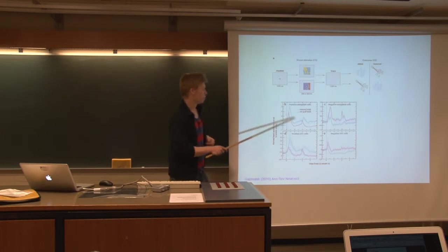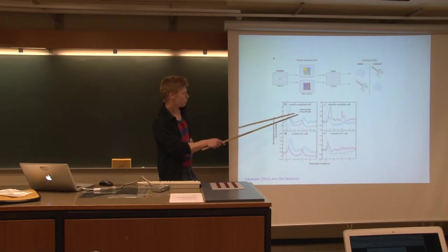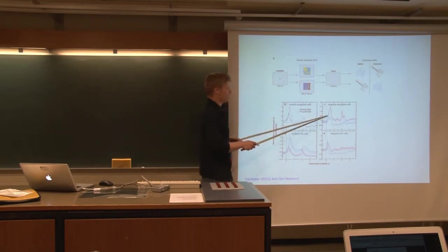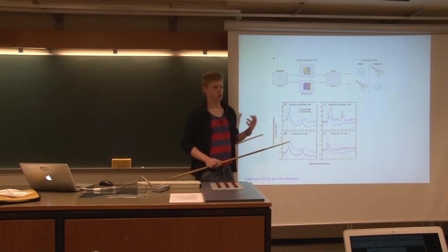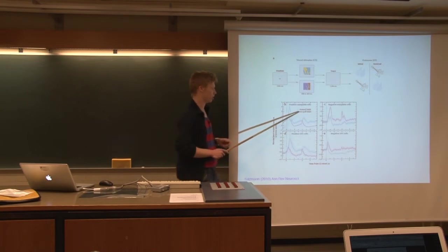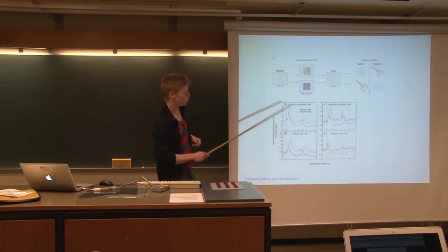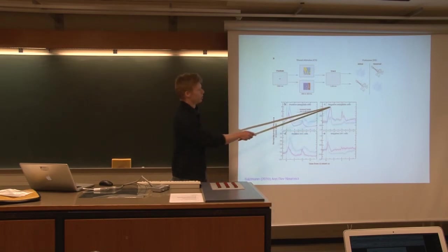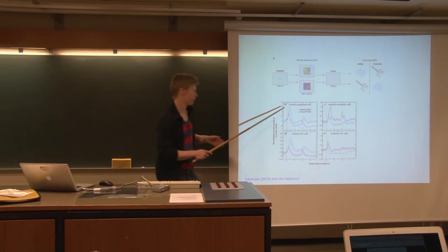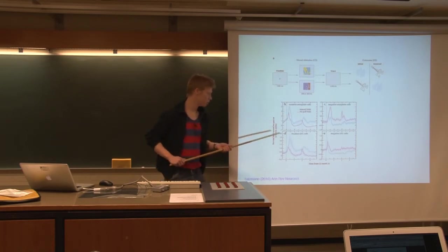You will see that there are parts of the amygdala that code for both things. And there are also parts where it's more pronounced that it codes for the negative air puff signal, which is the more unpleasant signal. In the trials where you receive a reward, there is less firing of these negative amygdala cells, whereas the positive ones fire in the opposite way.